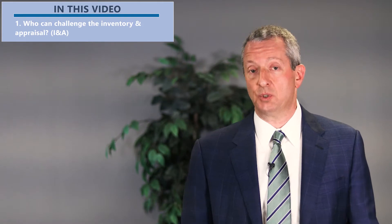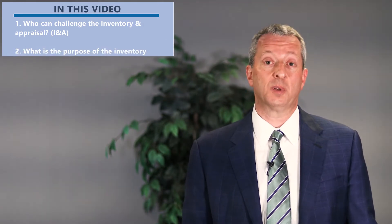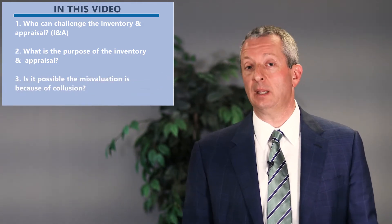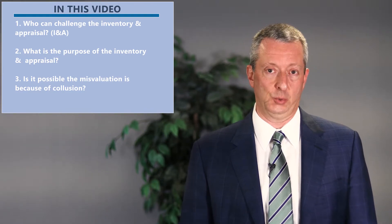Every so often in probate, the inventory and appraisal comes back from the probate referee and either the personal representative of the estate or some of the heirs or beneficiaries look at the valuation for a particular asset and believe it is wildly off the mark. When that happens, you probably want to do something about it. In this segment, I'm going to discuss what to do about it and how. You'll learn who can challenge the inventory and appraisal, the purpose for an inventory and appraisal, and whether a misvaluation in the inventory and appraisal is the result of collusion.